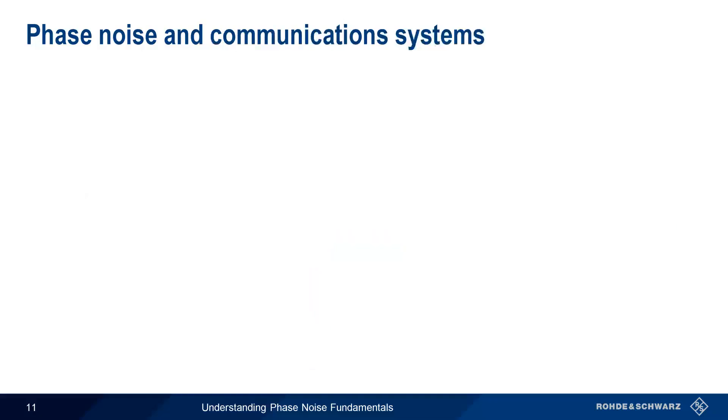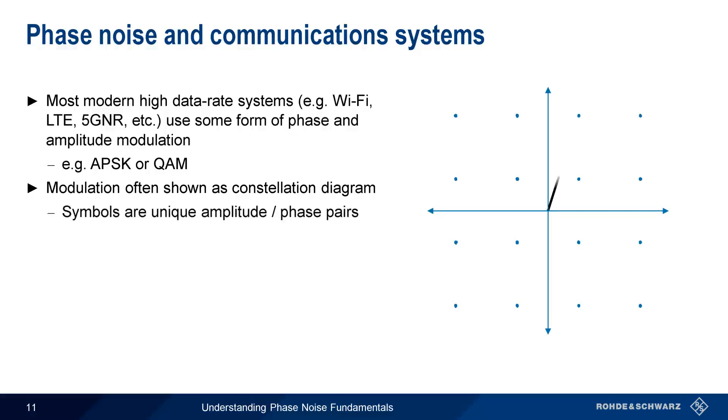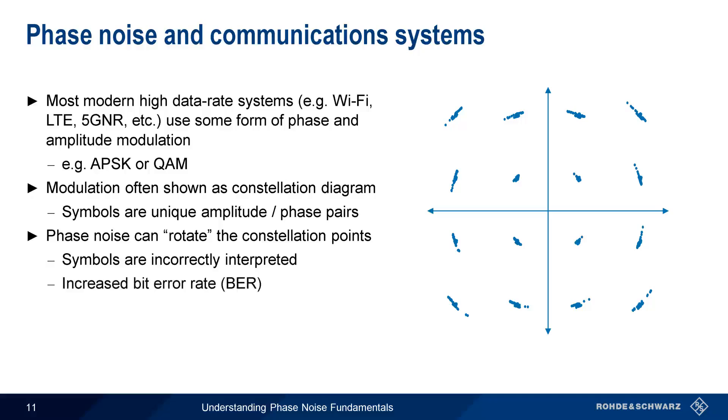Phase noise can also create problems for communication systems that use some form of phase modulation. Most modern high-data-rate wireless technologies use modulation schemes that are based on phase and amplitude modulation, for example, APSK or QAM. These modulation schemes are often represented using so-called constellation diagrams, which are polar diagrams where each point in the constellation is a symbol with a unique amplitude and phase. Phase noise causes a rotation of the constellation, with higher levels of phase noise creating greater rotation of the points. If this rotation becomes high enough, it's possible for one symbol to be mistaken for another, and this leads to bit errors or a higher bit error rate.